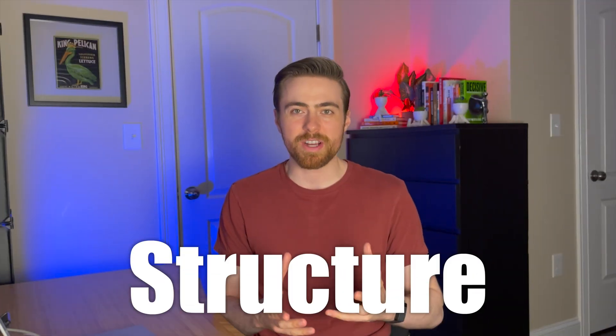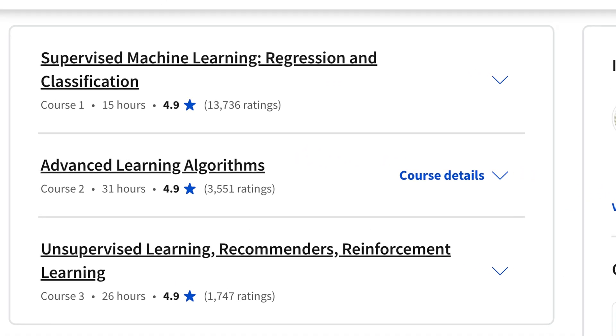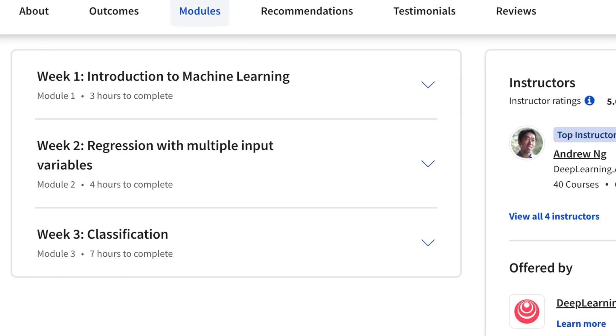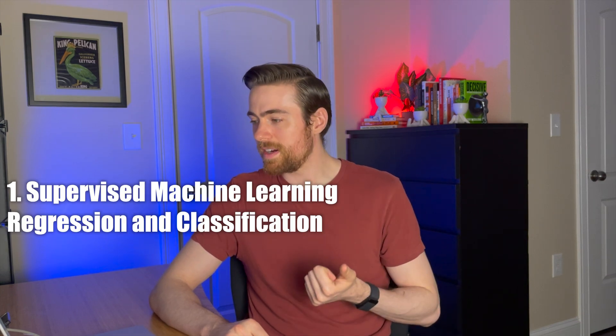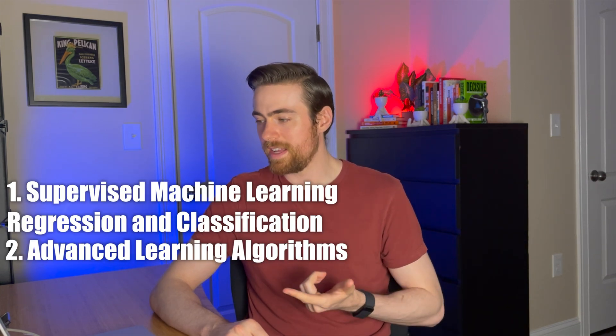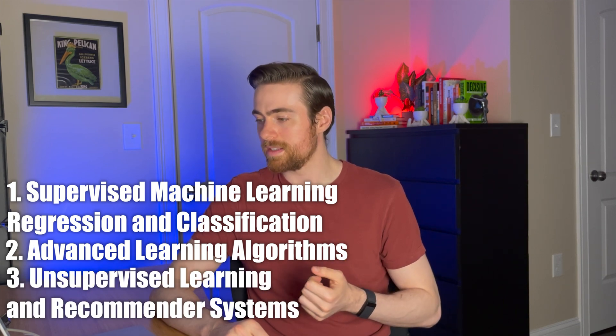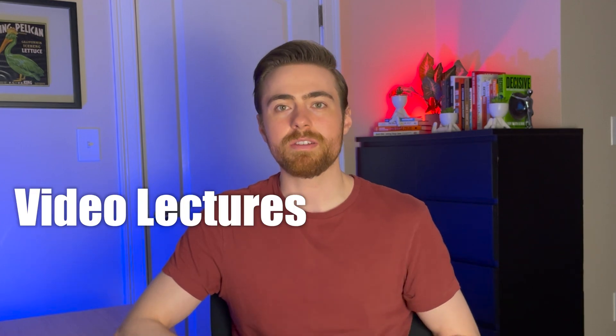The specialization is divided into three different courses, and each course is divided into weeks of material — though it doesn't have to take you a week; that's just what they named them. The three courses are: supervised machine learning — regression and classification; advanced learning algorithms; and unsupervised learning and recommender systems. Within each course there are video lectures, quizzes, and labs. Some are optional, but I highly recommend going through all of them, because if you skip some labs you'll have a tough time with the actual graded labs.